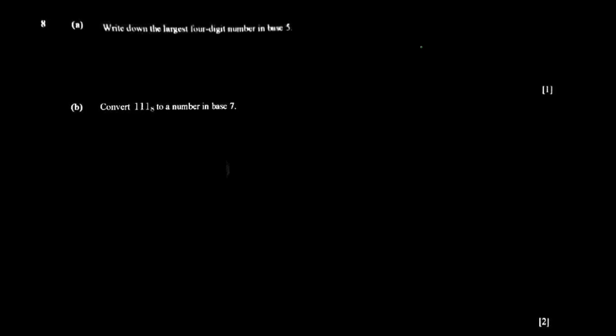This is interesting because ZIMSEC is asking the nuances, the really important little things. If you're in base two — the computer language — you only deal with two numbers: zero and one. Base three uses zero, one, and two. So in base five, the digits you'd use are zero, one, two, three, and four. To maximize your number, you use four as much as possible, and since it must be a four-digit number...